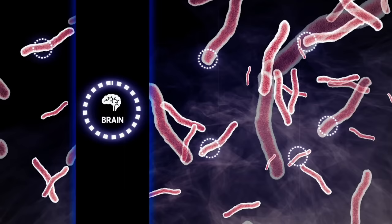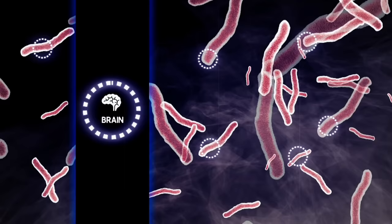So a bone cell reads only the set of instructions it needs to become bone. Your brain cells, they read the set that tell them how to become brain. If some cells suddenly decide to start reading other instructions, they can actually change from one type to another.